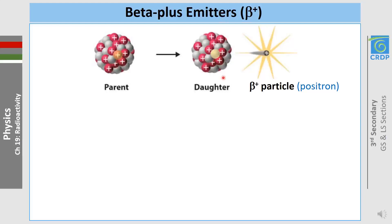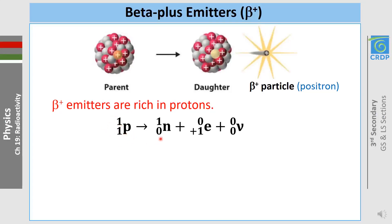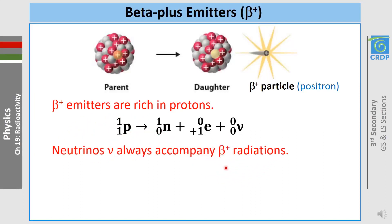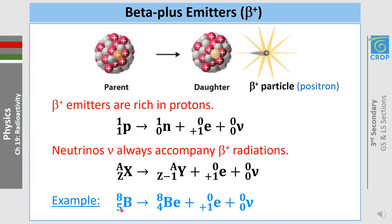Beta plus emitters: whenever a parent nucleus decays into a daughter nucleus and emits beta plus particles — positrons — we call that nucleus a beta plus emitter. Beta plus emitters should be rich in protons, since protons decay into neutrons emitting positrons (charge +1). Neutrinos accompany beta plus radiation. An example is boron-5 decaying into beryllium-4, emitting a positron, accompanied by a neutrino.